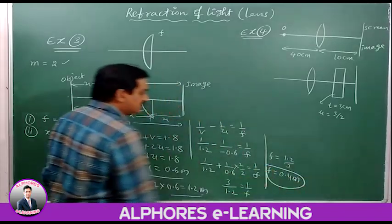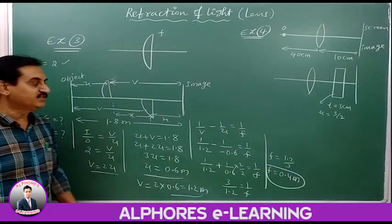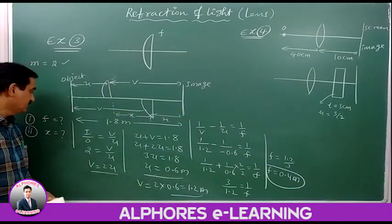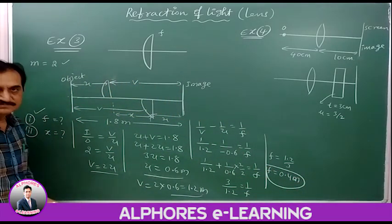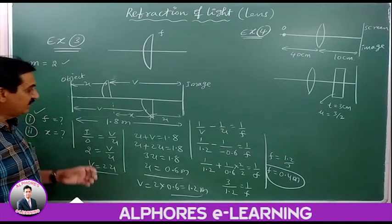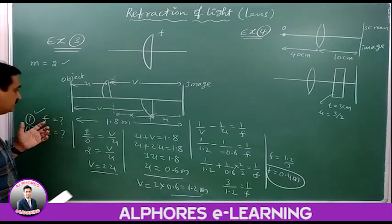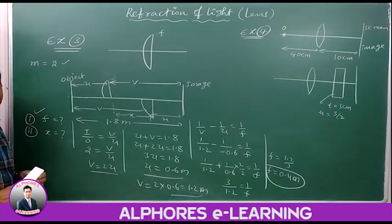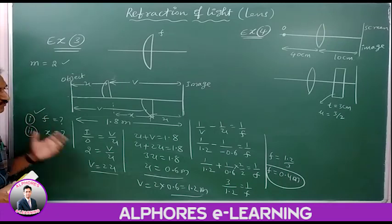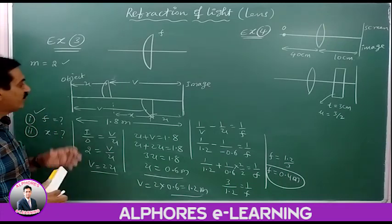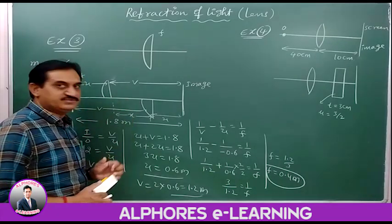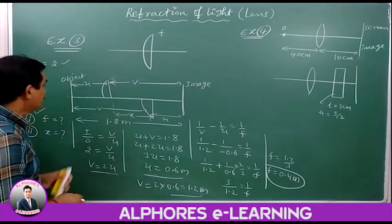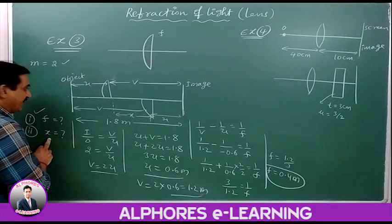So the focal length of the lens is 0.4 meters. That is the answer to the first question. Now for the second question: what is the distance X between the two lens parts?